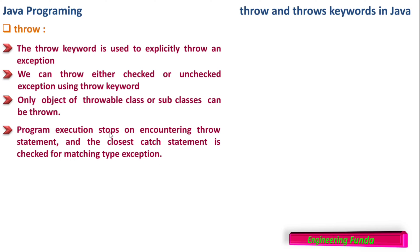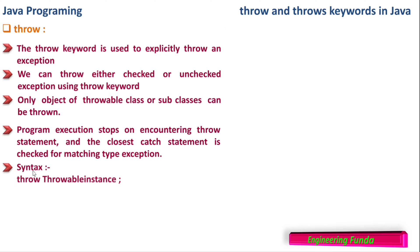Program execution stops on encountering a throw statement, and the closest catch statement is checked for matching the exception type. When we throw an exception, there should be a matching catch statement to catch that exception, whether it is checked or unchecked. Here is the syntax: throw followed by the throwable instance or object of the throwable class.